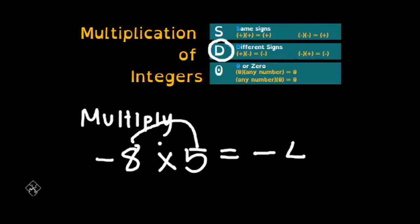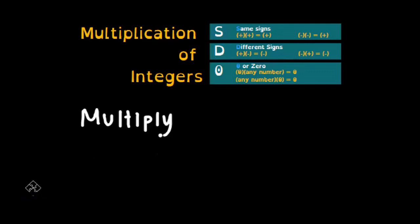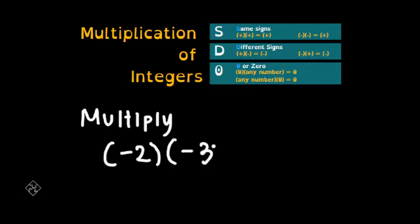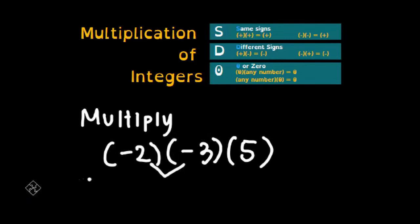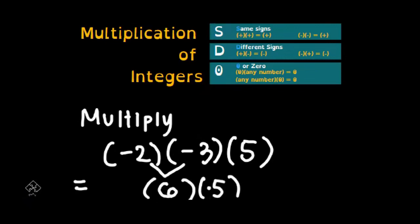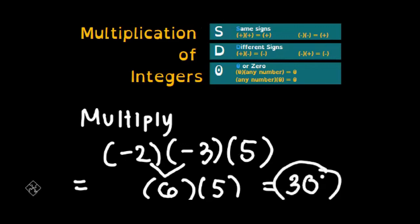For the last example, we have negative two times negative three times positive five. Tatlo na po yung terms natin, so ang gagawin natin, i-multiply muna natin itong dalawa: negative two times negative three. Same sign po sila, so positive ang sagot — negative two times negative three is positive six. Next, imumultiply natin yung natira: six times positive five — pares din po ang kanilang sign, so expect natin ang sagot ay positive din. Six times five is positive 30, and that is our final answer.